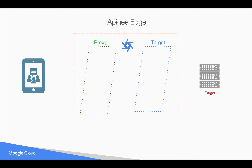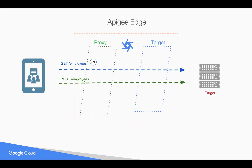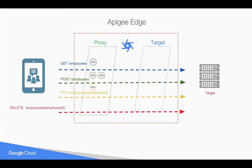For example, let's take an employees API. Whenever a call comes to slash employees it will be forwarded to the target; similarly, whenever a call comes to create an employee the same call will be forwarded to the employee backend service. But let's say you want to execute different policies based on whether it is a GET employees request, a create employees request, or an update employee request — obviously not every API operation is the same. For example, whenever a DELETE call comes you want to execute different policies, completely different from GET all employees, create an employee, or update employee.